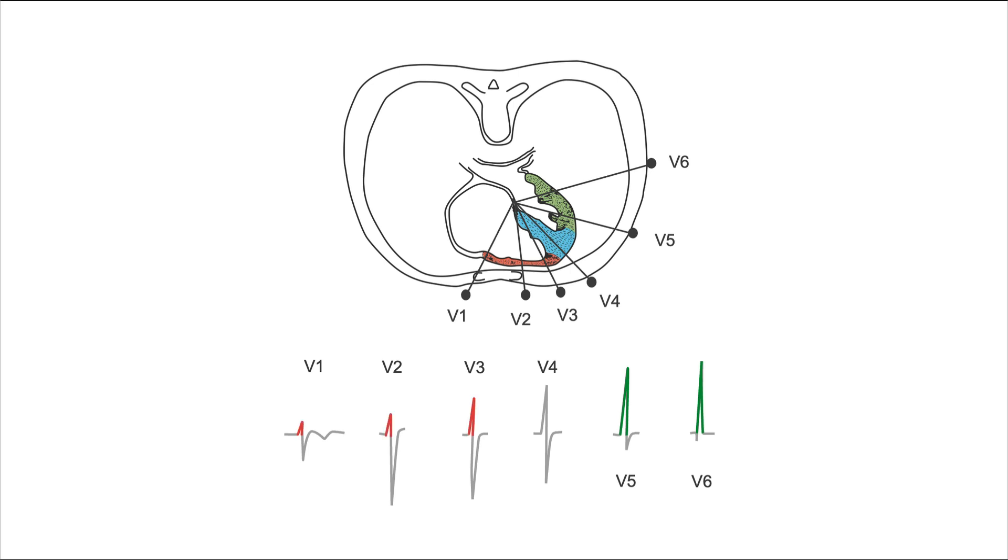The reason for that is simple. The size of the R-waves represents the ventricular mass underneath those leads, and you see the ventricular mass here is much, much higher than the ventricular mass over here. This large ventricular mass over here produces a very strong vector in this direction.